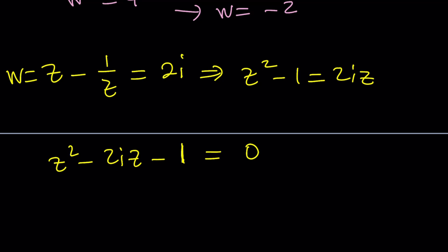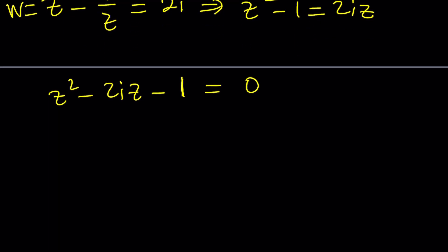Since this is a quadratic, we can use the quadratic formula. Negative b plus minus the square root of b squared, which is negative 4. Notice that if you square this, you're going to get negative 4. Minus 4ac, that will be a plus 4, all of that divided by 2. Negative 4 and positive 4 cancel out. And this gives us i.